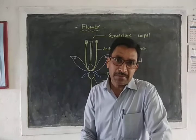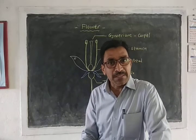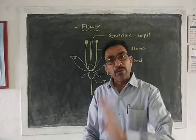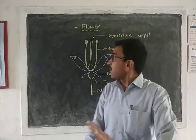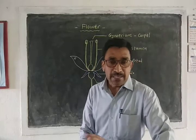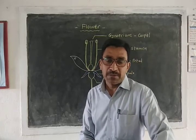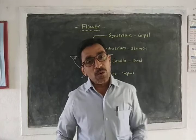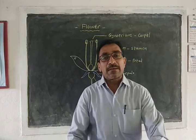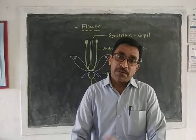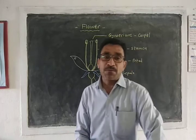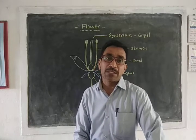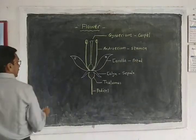Good morning. In the last lecture we studied about inflorescence and types of inflorescence. Today we are going to discuss the flower — it is another chapter. Before going to study the flower, it is necessary to know the definition of flower. Flower is a highly condensed and modified shoot for the purpose of sexual reproduction.